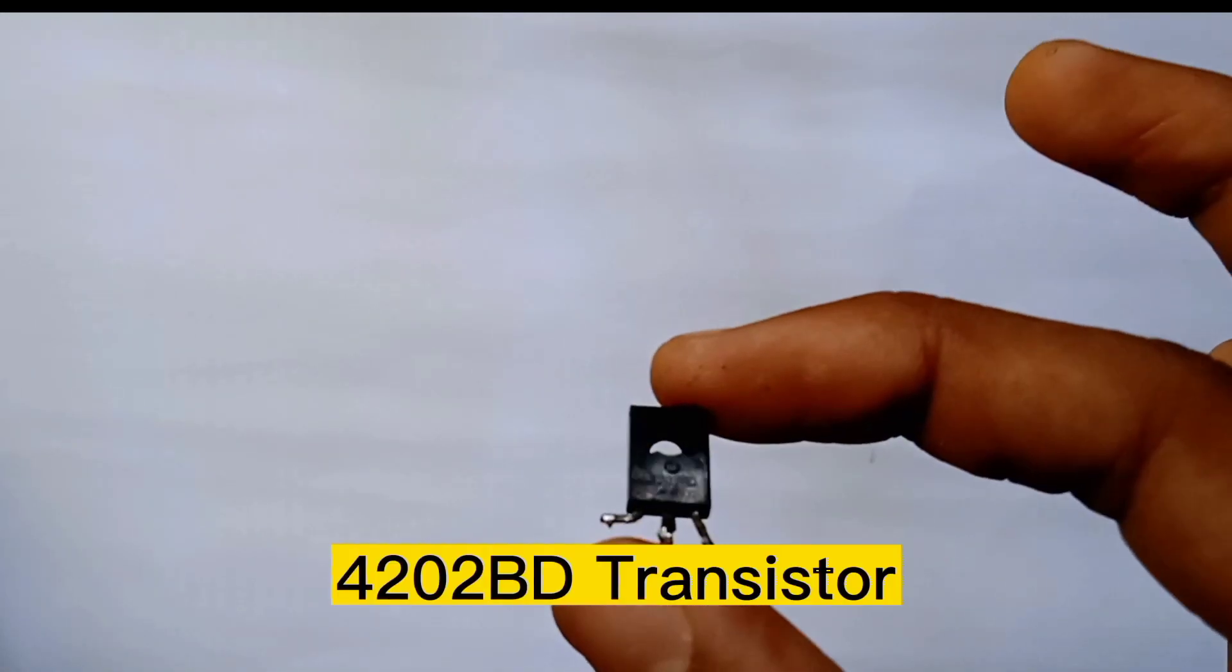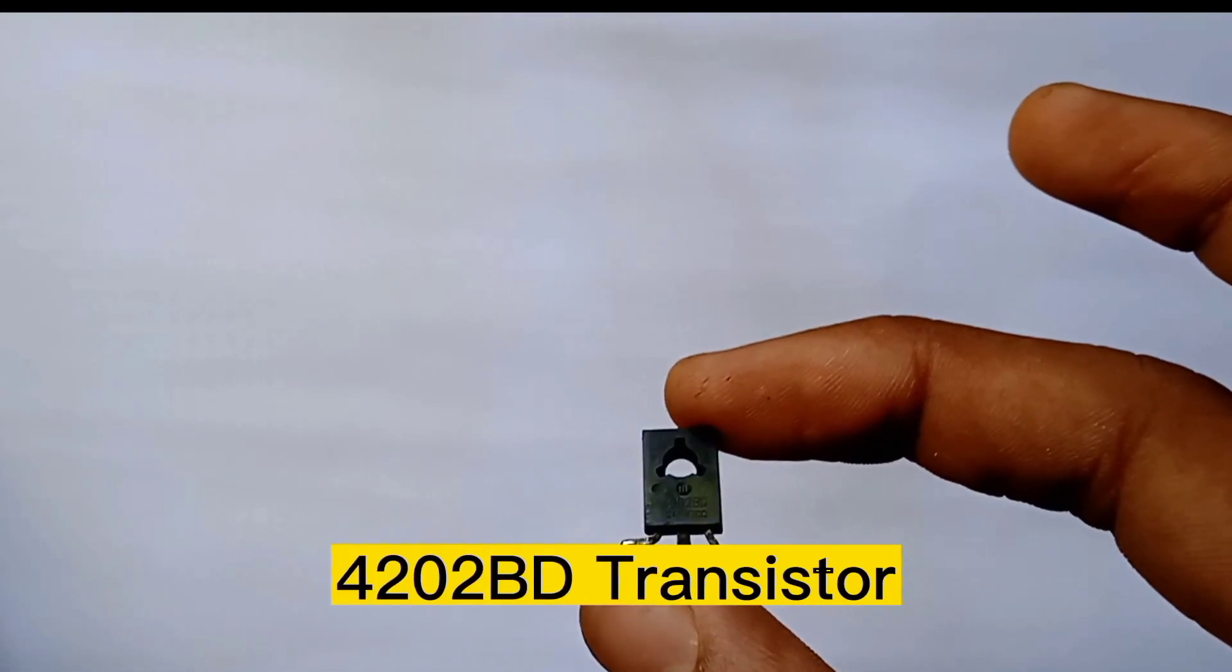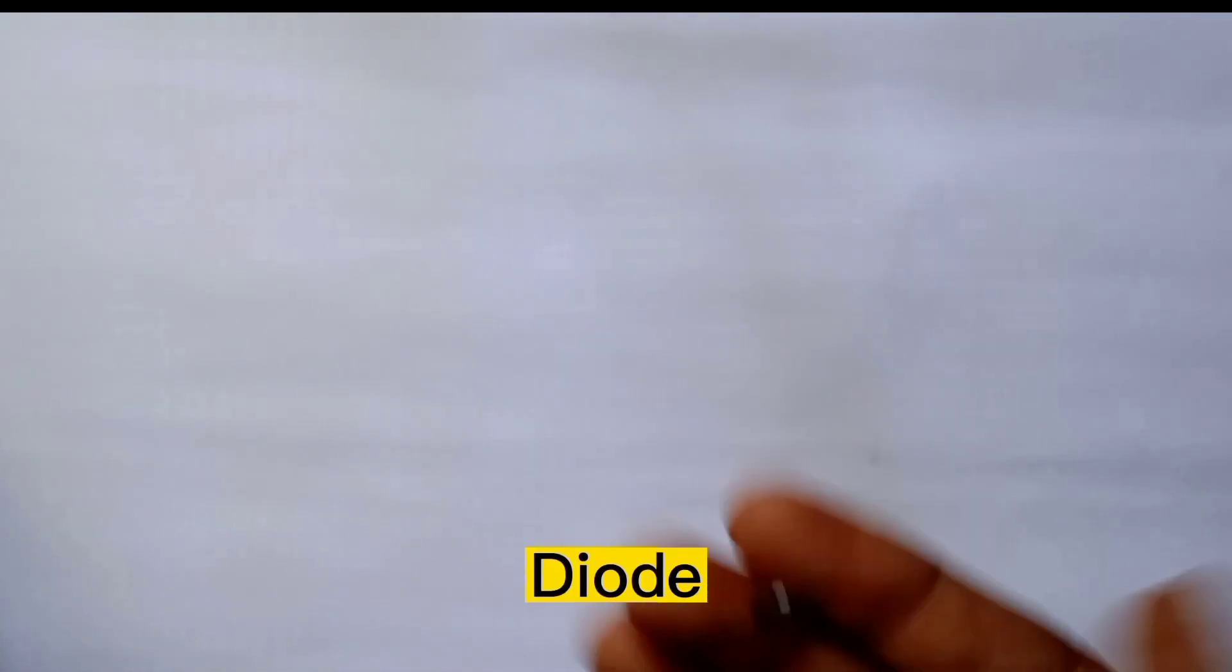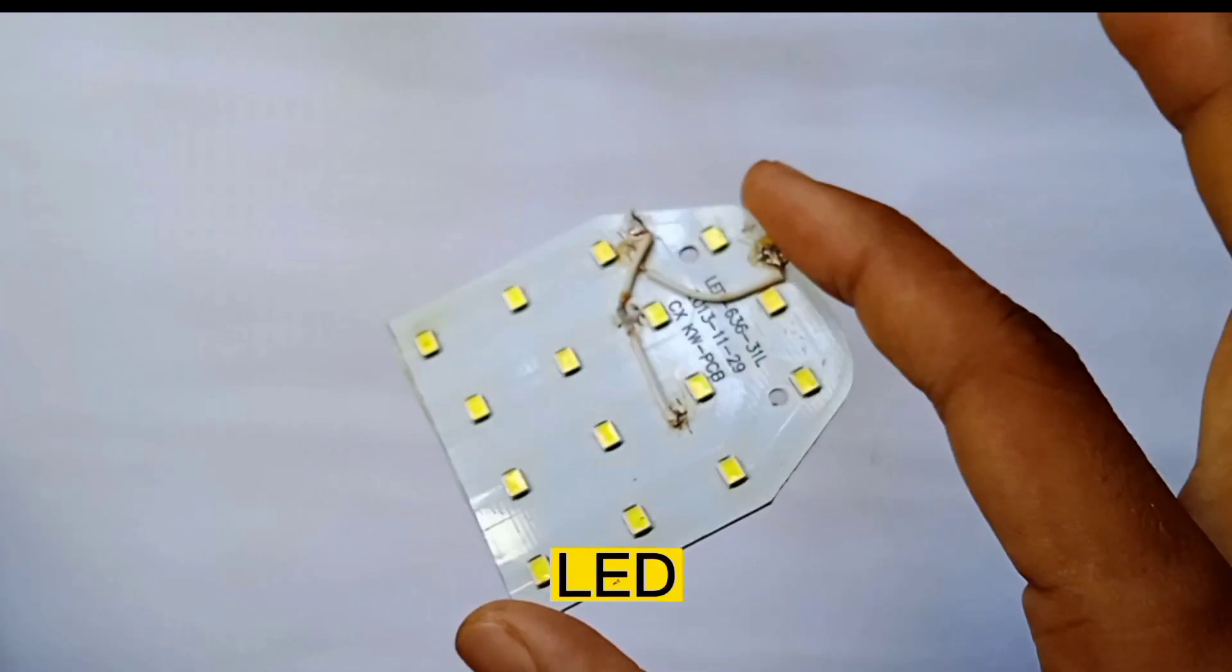So let's get started. You'll need a 420BD transistor, a diode, an LED, and a battery.